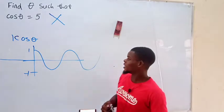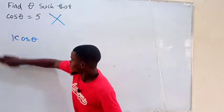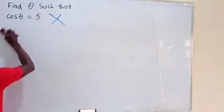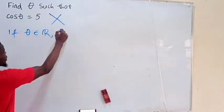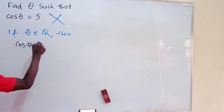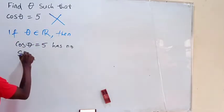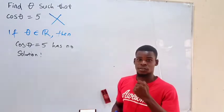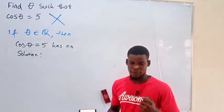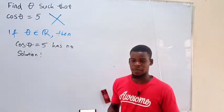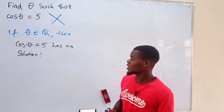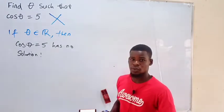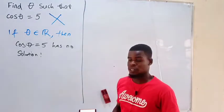We could end the video, but that would be too boring. The truth is that if theta is a real number — if theta belongs to ℝ — then cosine of theta equals 5 has no solution. That is true. But what about the complex numbers? Since the set of complex numbers has more elements than the set of real numbers because of the imaginary component, let's investigate the complex numbers to see if we can find an angle theta, which is actually a complex angle, whose cosine will give us 5.